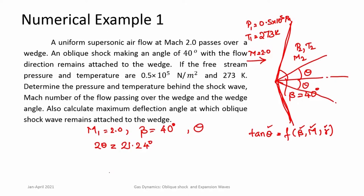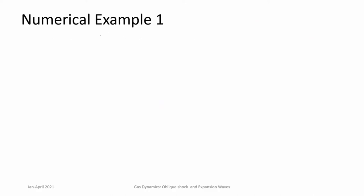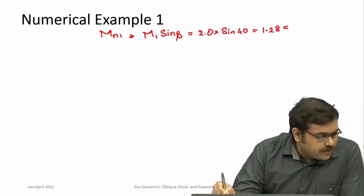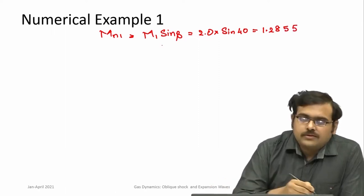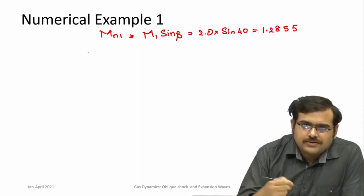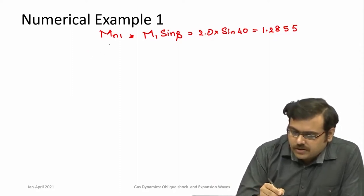Since beta is given, we need to find the pressure and temperature after the shock. The approach is to look at the normal component of the shock. Mn1 = M1 * sin(beta) = 2.0 * sin(40°), so Mn1 = 1.2855. Then use normal shock relations for this normal component — that is how oblique shock problems are solved.